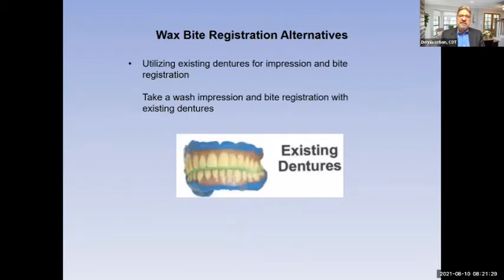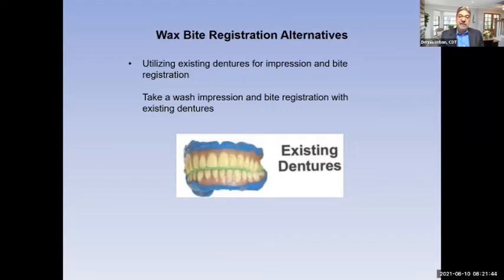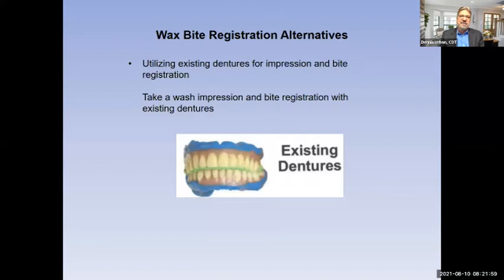Some bite registration alternatives: you can utilize the patient's existing dentures. If they're in good shape, border mold those dentures, take a wash impression, and take a bite registration at the same time. Sometimes we'll even have the patient come to the laboratory — we'll pour the models, put them on the articulator, and return the dentures to the patient the next day. This works especially well for patients who like their existing aesthetics, bite, and occlusion and want to mimic that.